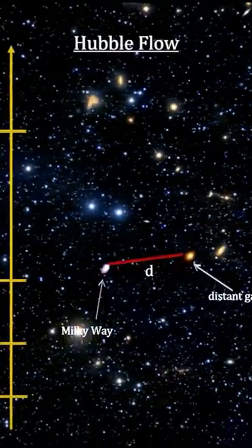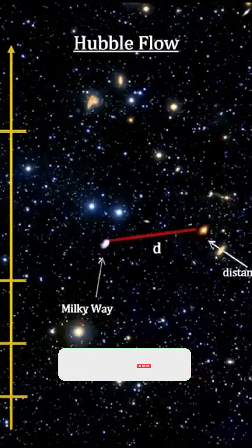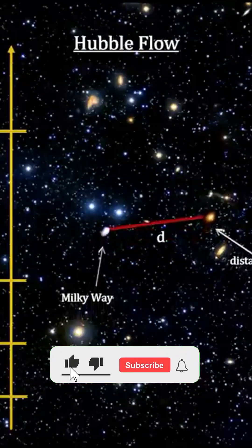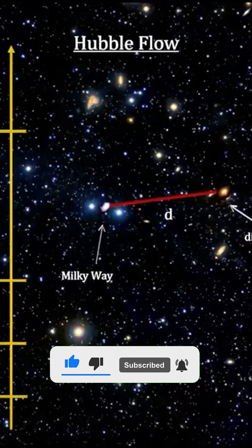So this constant describes the relationship between the speed at which two points in the universe move away from each other and the distance between them, not the addition of new space.